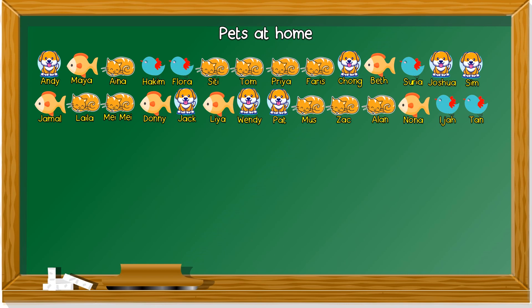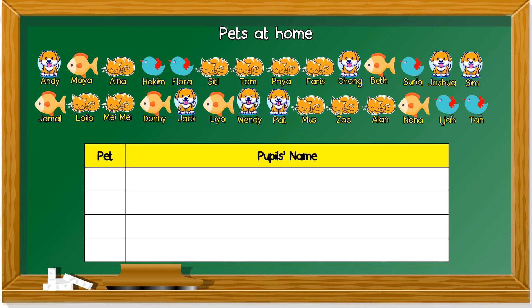Let's take a look at this set of data. Pets at home. There are many pets and you can see names of a lot of pupils. We have pet and pupils name. What's the first pet you can see? It's a dog.